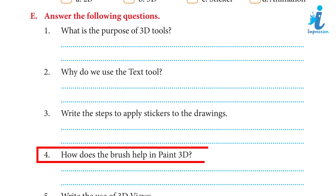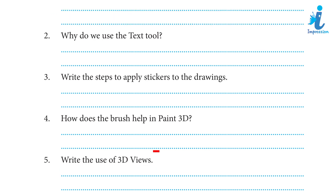4. How does the brush help in Paint 3D? Answer: The Brushes tool has different brush types which are used to draw lines by hand in various styles. It can be used to paint on both 2D and 3D surfaces. 5. Write the use of 3D views. Answer: 3D view enables you to edit from any angle, which means even more accurate and intuitive 3D creation. You can move around your 3D designs.